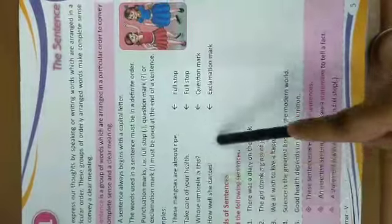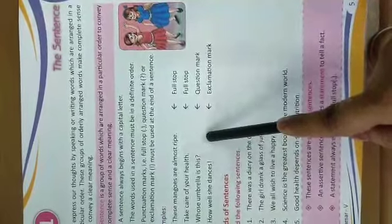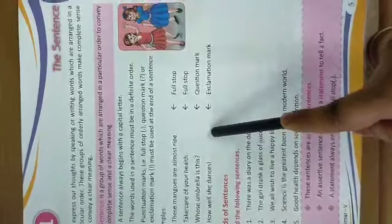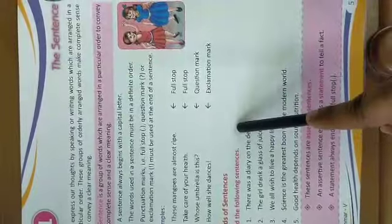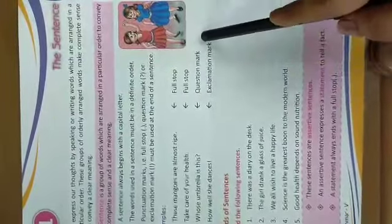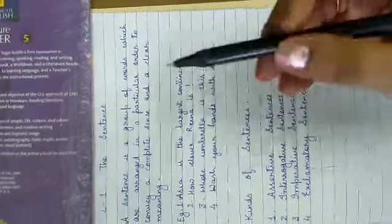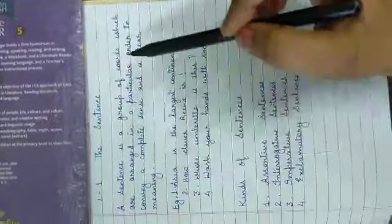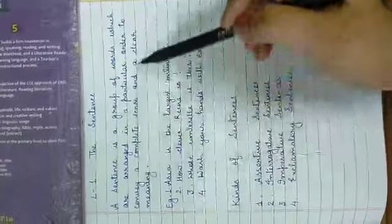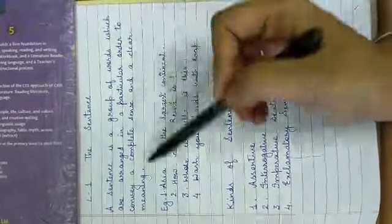So these are various kinds of sentences. Further in this lesson we will study about various kinds of sentences, and in each kind there should be a full stop, question mark, or exclamation mark at the end. So children, to summarize: a sentence is a group of words which are arranged in a particular order to convey a complete sense and a clear meaning.